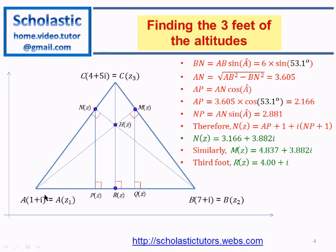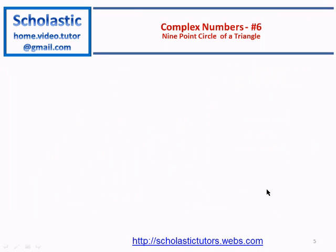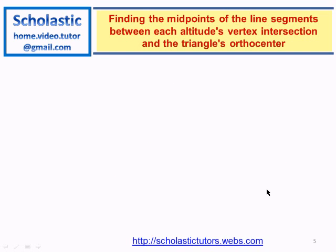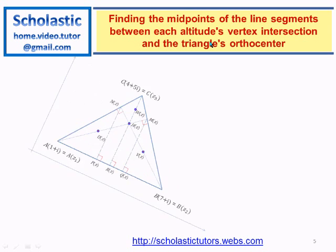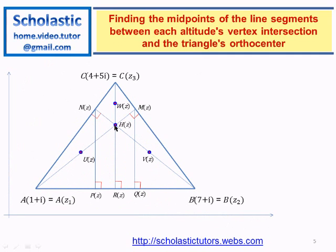Now let's find the midpoints of the line segments between each altitude's vertex intersection and the triangle's orthocenter. Basically the triangle's orthocenter is the one that you get after dropping perpendicular to the opposite side.